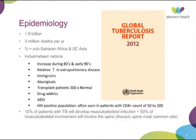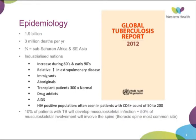In terms of the epidemiology of TB, it's a huge problem worldwide. The WHO puts out a report every couple of years based on their field findings. It's estimated to affect over 1.9 billion people directly, with 3 million deaths per year. Three quarters of those are in Sub-Saharan Africa and Southeast Asia. In industrialised nations, incidence increased in the 80s and early 90s, particularly extra-pulmonary disease in immigrants, Aboriginal transplant patients, drug addicts, and the HIV-positive population with low CD4 counts. Up to 10% of TB patients develop musculoskeletal infections, and 50% of musculoskeletal involvement is within the spinal column, the thoracic spine being the most common site.